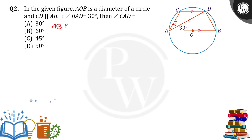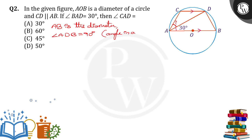AB is the diameter of the circle. Now, angle ADB is equal to 90 degrees, because the angle in a semicircle made by the diameter is 90 degrees.